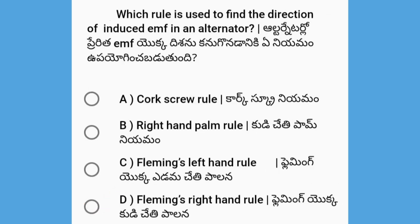Next, which rule is used to find the direction of induced EMF in an alternator? The options are Cork Screw Rule, Right Hand Palm Rule, Fleming's Left Hand Rule, and Fleming's Right Hand Rule. The answer is Fleming's Right Hand Rule.